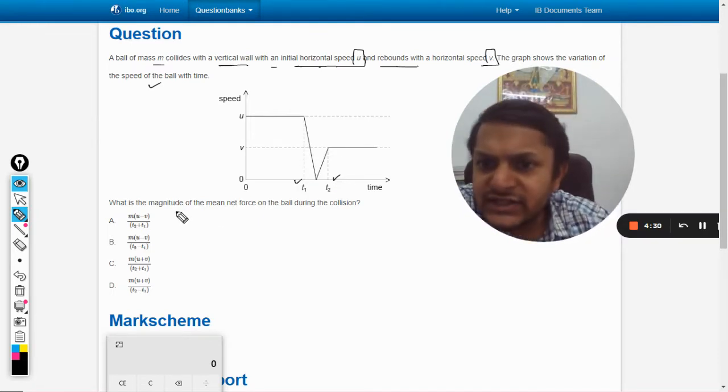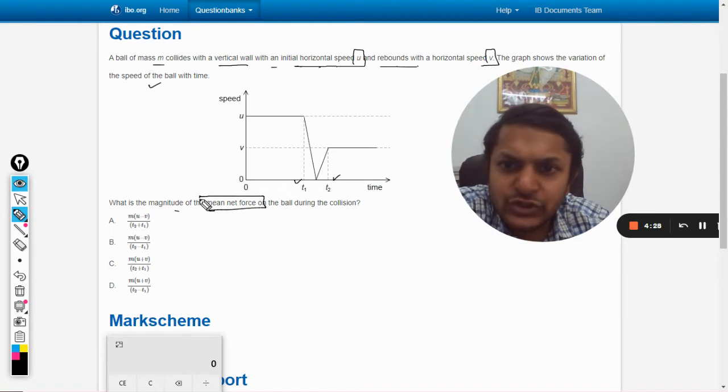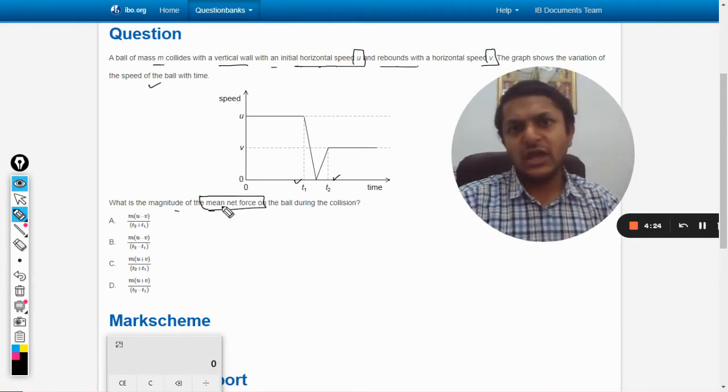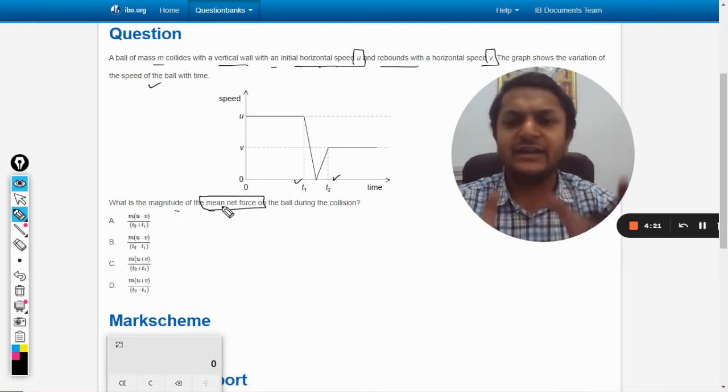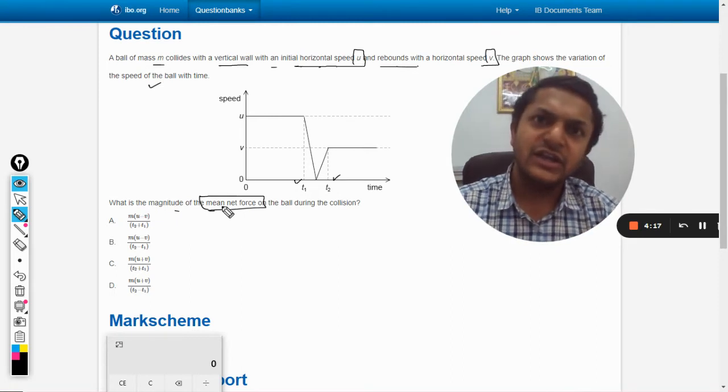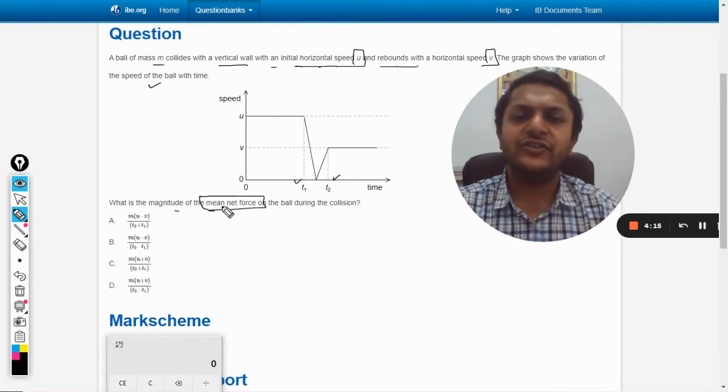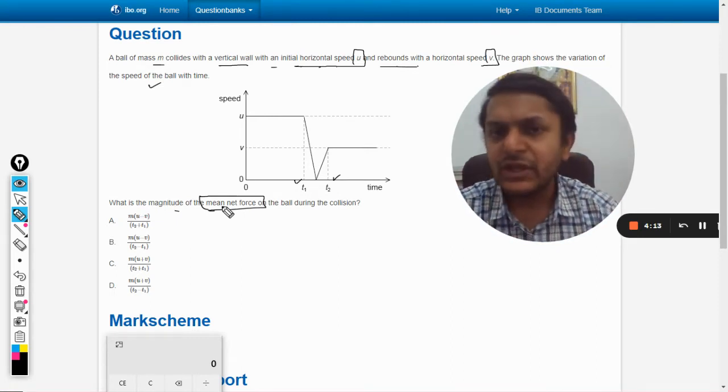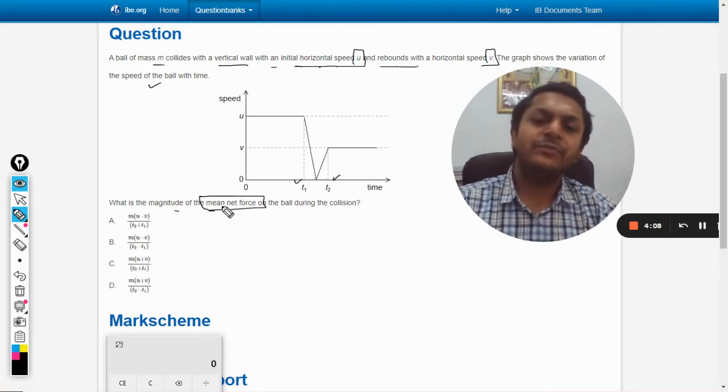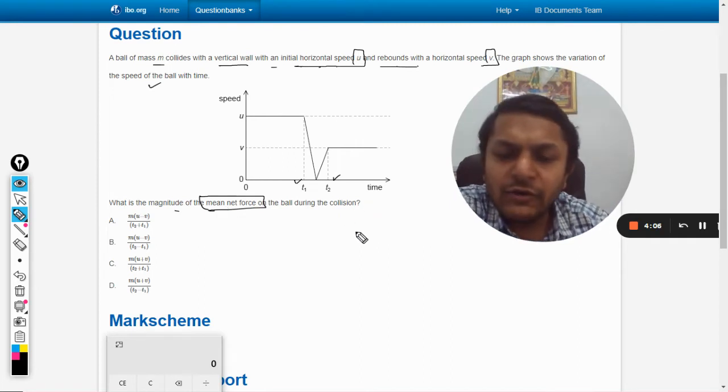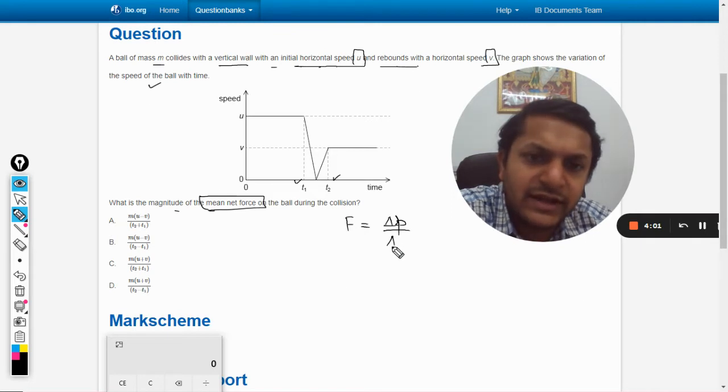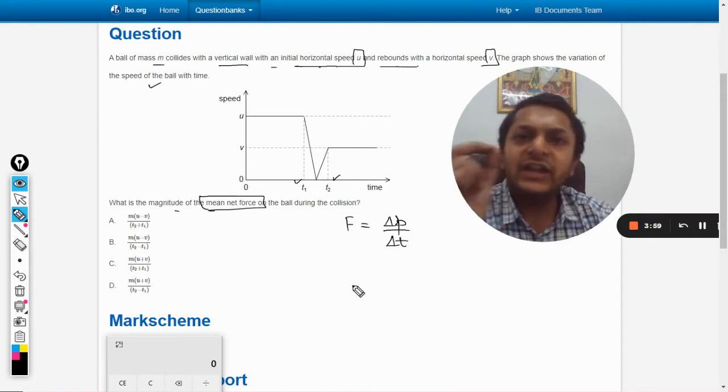So what is the magnitude of the mean net force? Now in these kinds of cases when we want to find the mean net force, it's a collision-oriented case so we are definitely interested in finding the change in momentum. In collisions, that is the only important thing: change in momentum. We know force F is defined as the change in momentum divided by change in time.